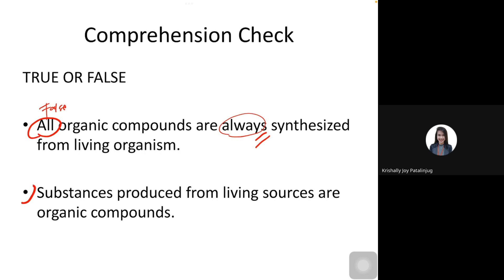What about the second statement? Substances produced from living sources are organic compounds. True or false? True, of course. Any compound produced by living organisms like humans, animals, plants, microorganisms, as long as they are living sources, any chemical substances they produce are considered organic. Living species are made up of organic chemicals, so whatever chemicals a living species produces is classified as organic.